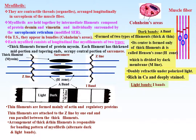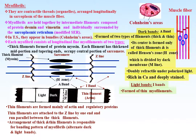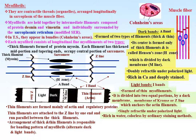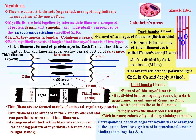The light band or I band is formed of thin (actin) filaments only. The I band is divided into two equal portions by a dark membrane called the Z line, which anchors the actin filaments. The I band is singly refractile under polarized light, rich in water, and colorless by ordinary staining methods. The corresponding bands of adjacent myofibrils are arranged at the same level by a system of intermediate filaments, binding them together and causing the transverse striations of the muscle fibers.